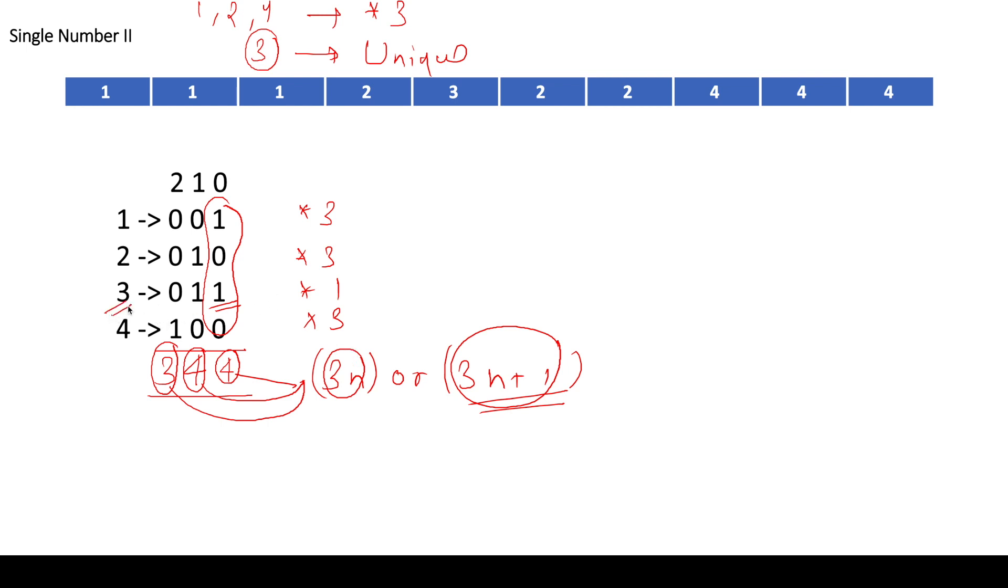Now why is this information important? See, the unique number is 3 in this case. If for 3, I know that this is the set bit, this is the set bit and this is the unset bit, won't I be able to convert this thing into 3? I will be able to. So that's why this information is important.